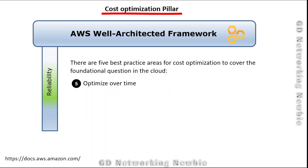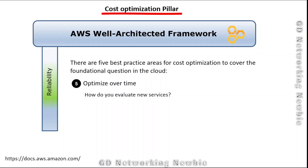The fifth and final best practice area is optimize over time — how do you evaluate new services? In this video, we briefly covered the important points about design principles and best practice areas regarding the cost optimization pillar of the AWS Well-Architected Framework.